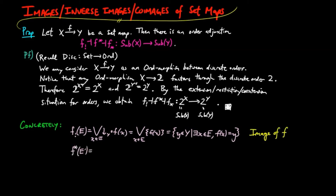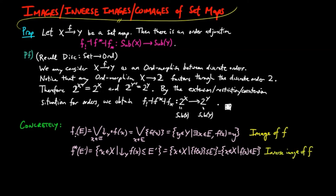For the f restriction on a subset e, this is given by those elements x in X such that the lower segments on fx is less than or equal to e prime, which equals x in X such that the singleton set f on x is less than or equal to e prime. This equals the set of all elements x in big X such that fx is in e prime. In other words, this is the inverse image of f.